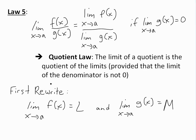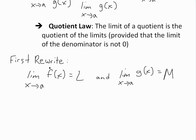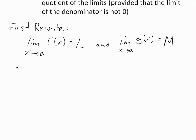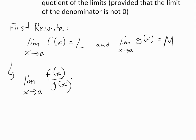Before I prove it, I want to first rewrite: let the limit as x approaches a of f(x) equal L, and the limit as x approaches a of g(x) equal M. So we can rewrite the quotient law as: the limit as x approaches a of f(x) divided by g(x) equals L divided by M.